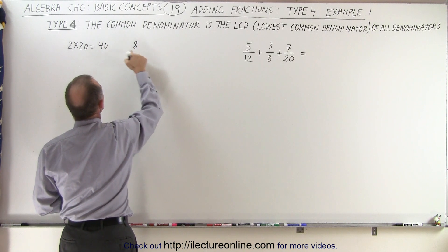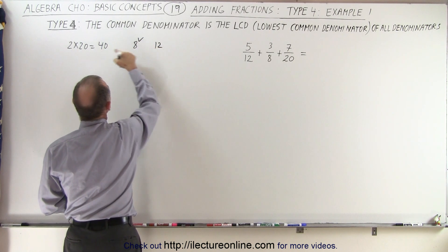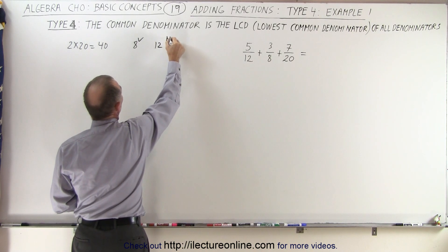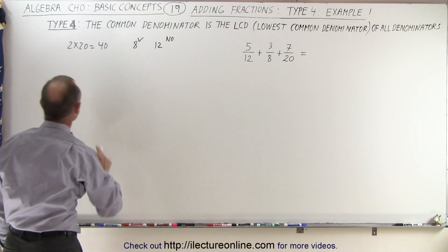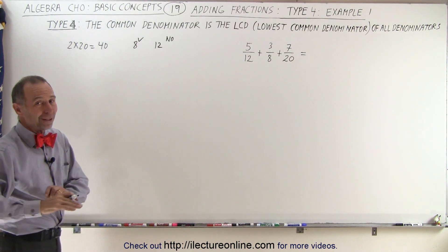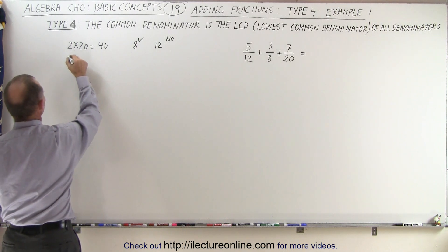And now does 8 fit evenly into 40? The answer is yes. Does 12 fit evenly into 40? And the answer is no. So 40 is not a good lowest common denominator. Or at least it's not even that it's not a good one, it just isn't the lowest common denominator. That's a better way to say it.